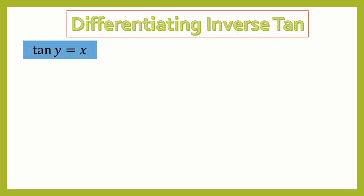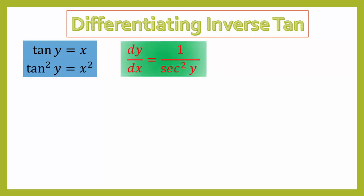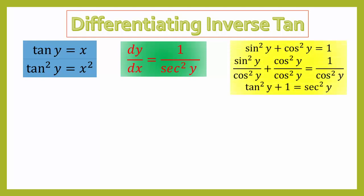So how do we differentiate? We know that tan y = x, and if we square that we get tan²y = x². We also know that dy/dx = 1/sec²y, and we know this result here that tan²y + 1 = sec²y.